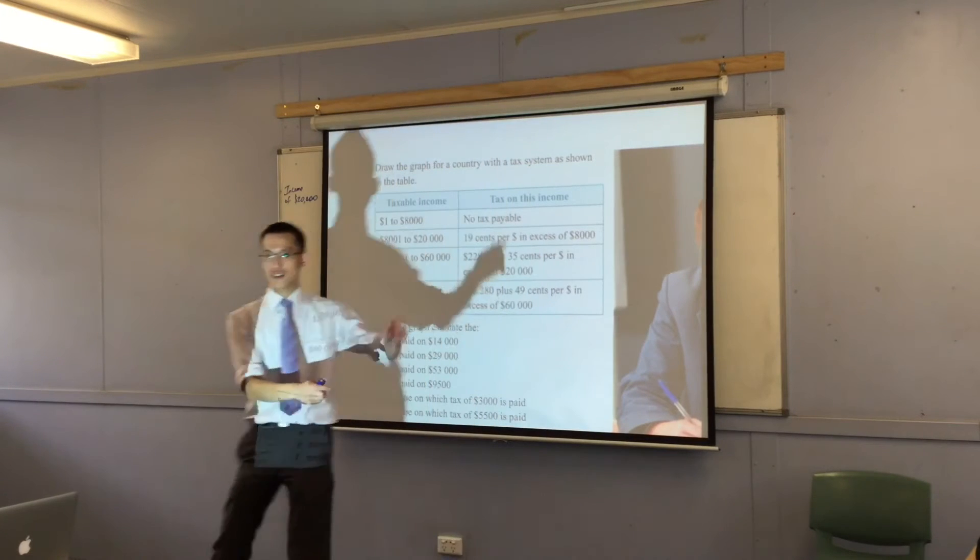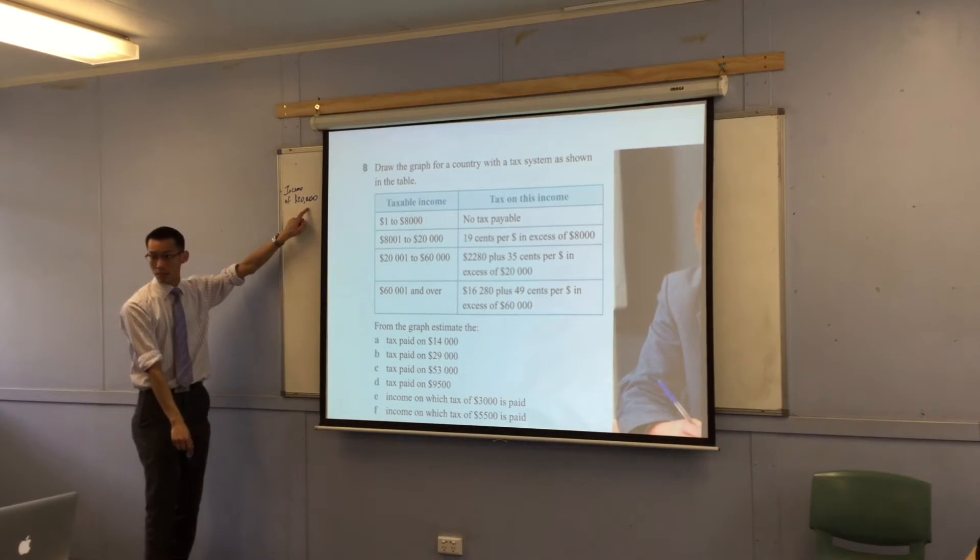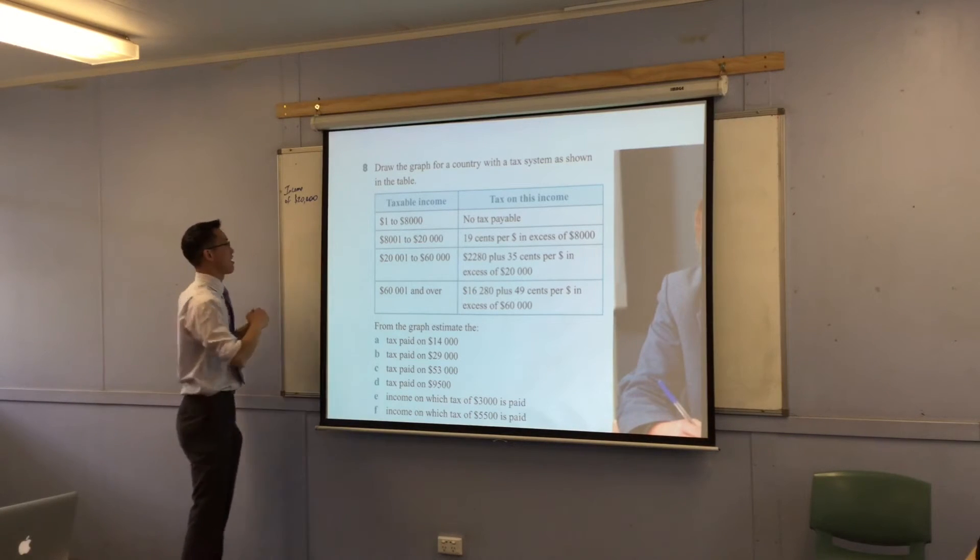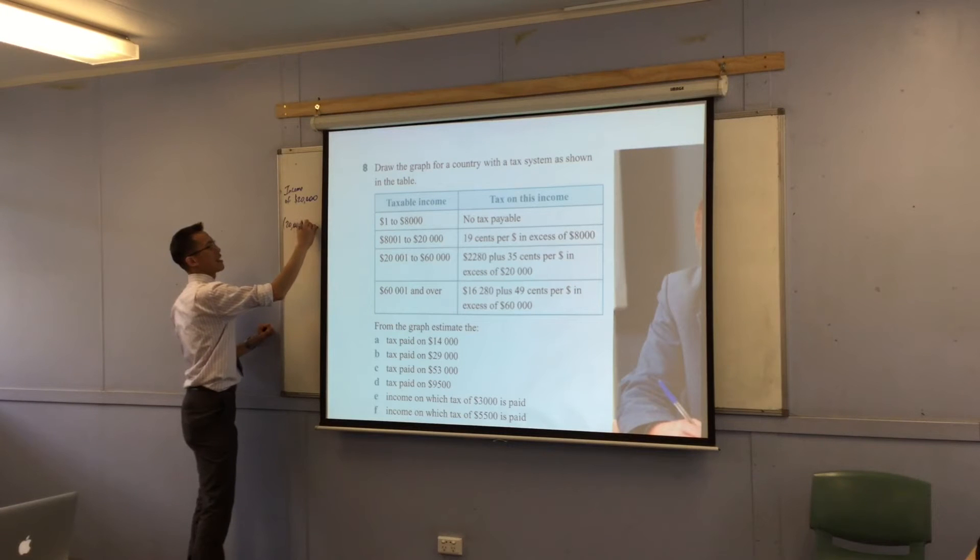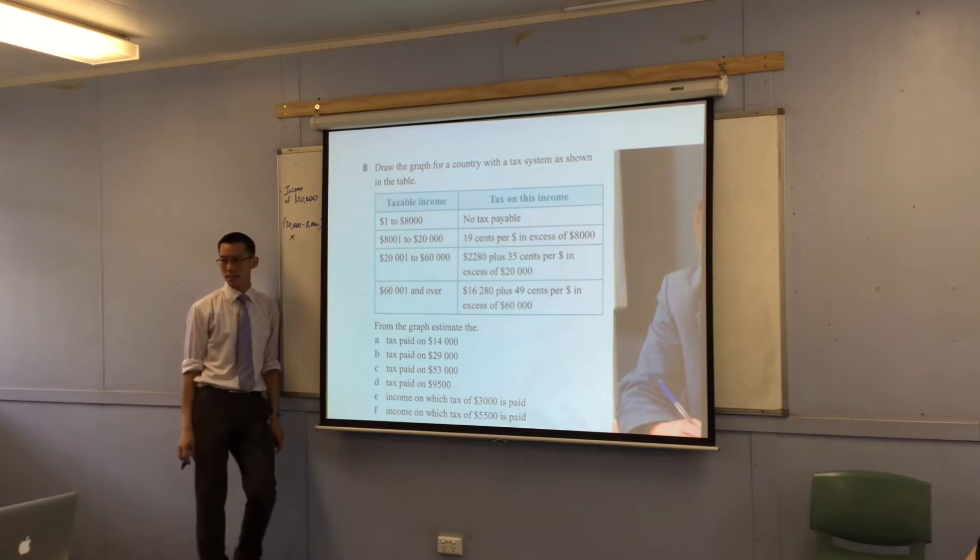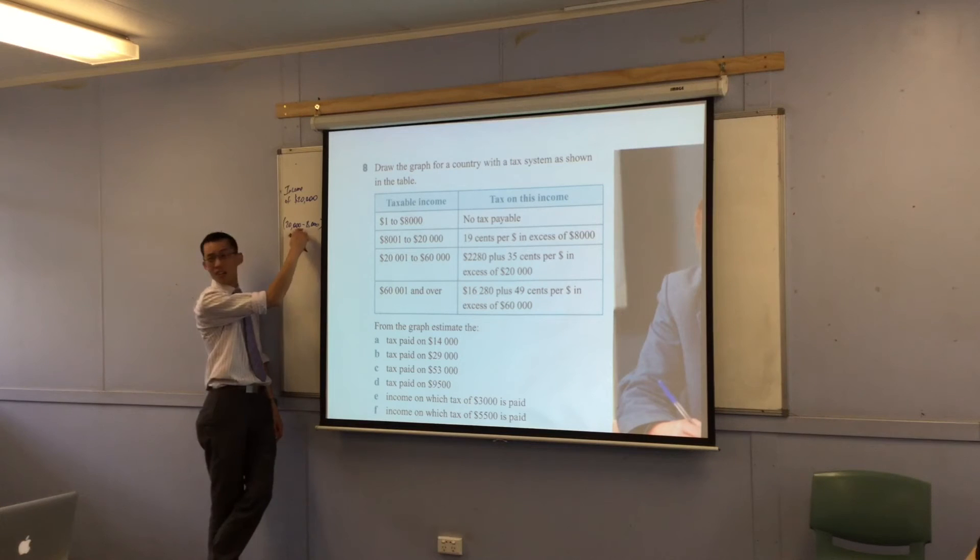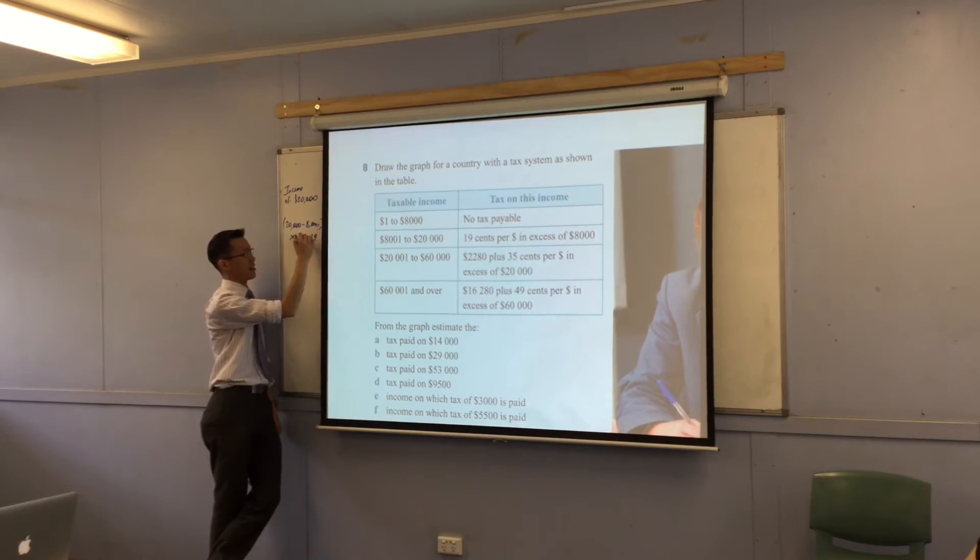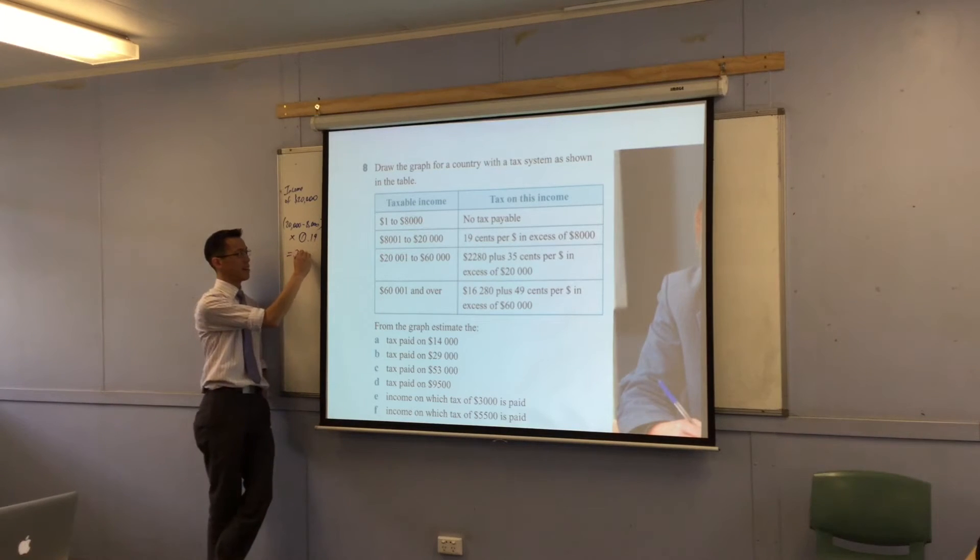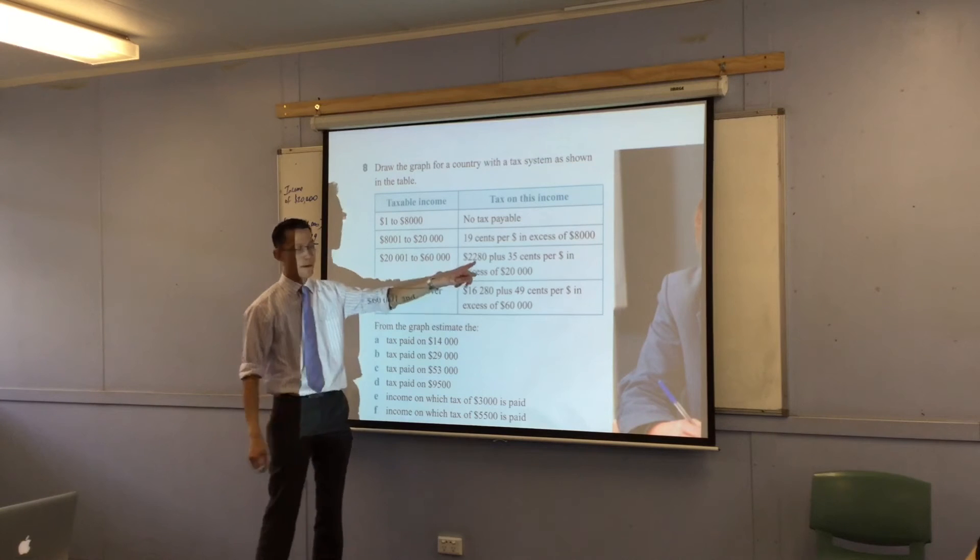The amount of tax you pay is based on what it says over here in the right hand side, right? $0.19 per dollar in excess of $8,000. How many dollars are you in excess of $8,000? It's $12,000, right? In other words, it's $20,000 take away $8,000. There's the $12,000. And you're multiplying that by how many cents in the dollar? $0.19. So this is all in dollars. Do you agree with that? Now when you go ahead and hit equals on your calculator, unsurprisingly, you should get $2,280.